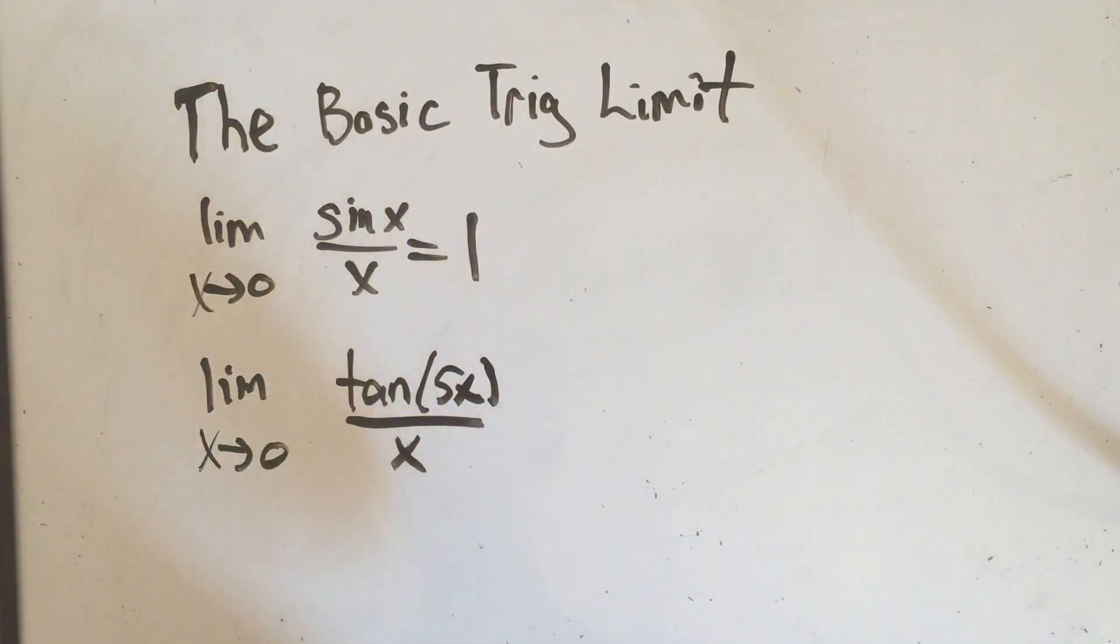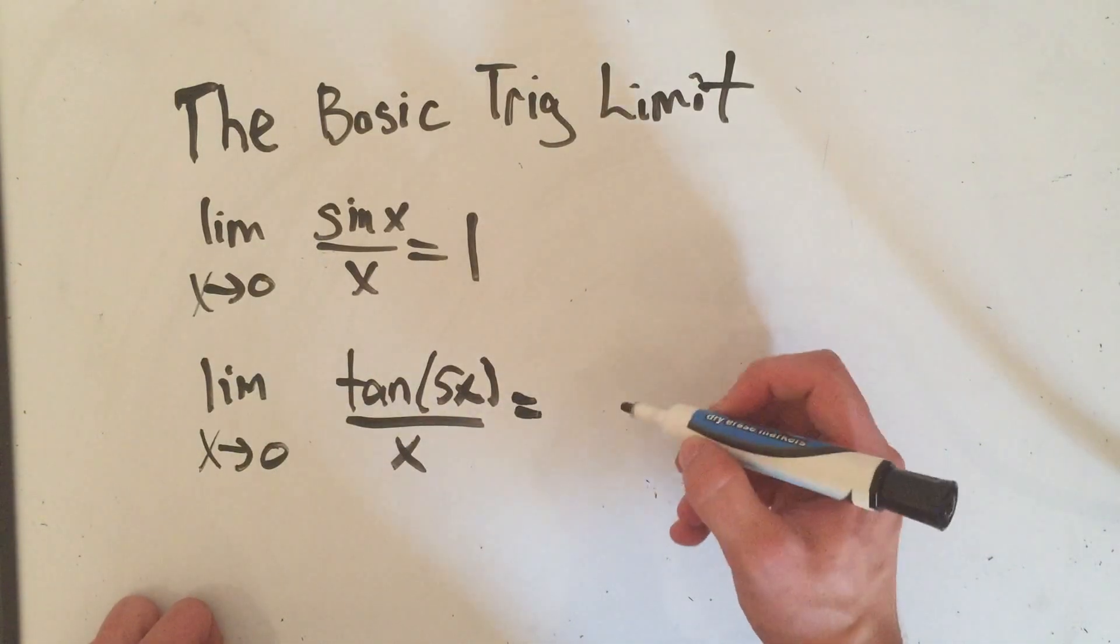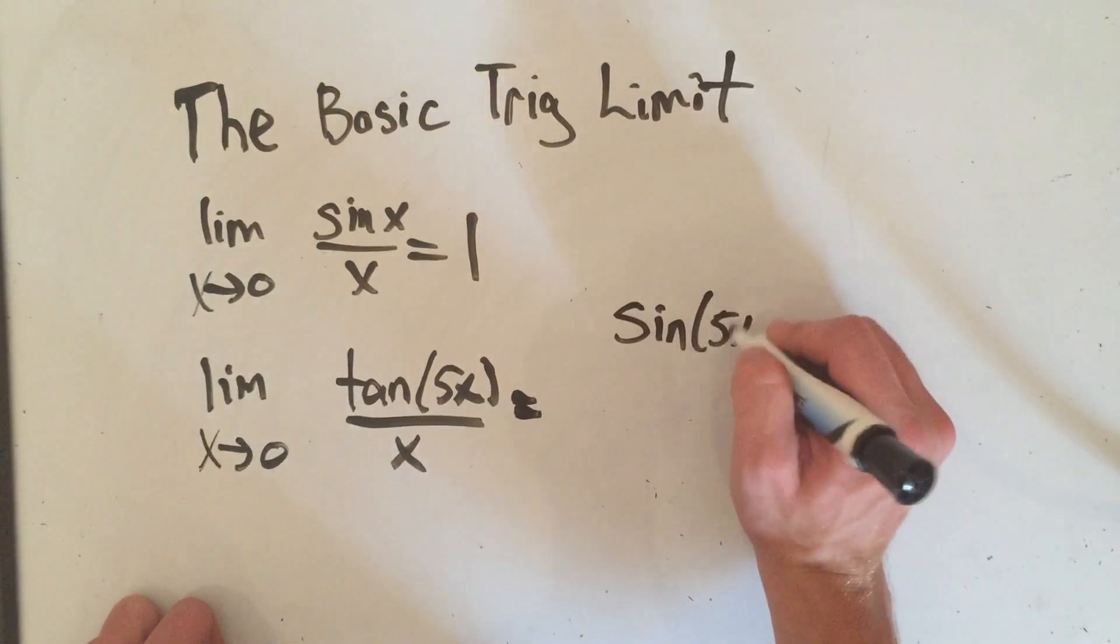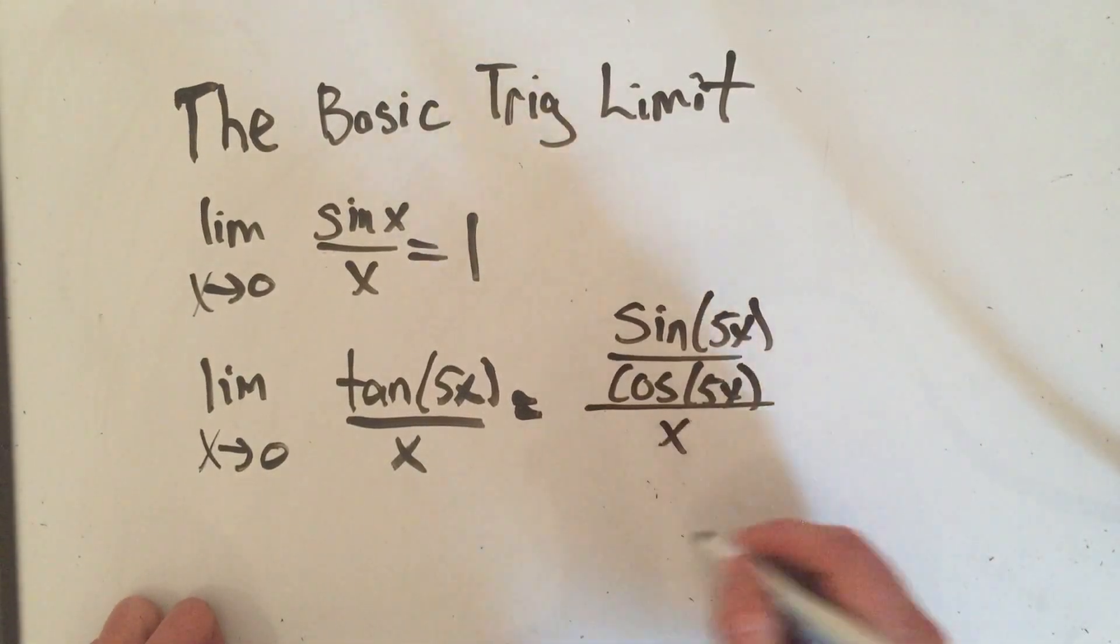The good thing to do with this is to write tangent as sine over cosine. So tangent is sine of 5x over cosine of 5x all over x.